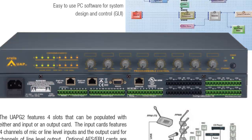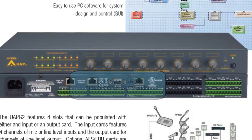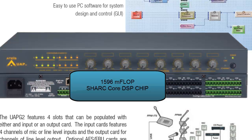There are also nice hardware features inside the box. The audio input and output cards are 100% field-configurable. If you order an 8x8 box and arrive on the job site needing a 12x4 configuration, simply order the necessary cards, pop the top, plug in the boards, power up, and reconfigure — no need to send the unit back. The UAP also features a 1596 MegaFLOPS Shark Core DSP engine, making it a very powerful processor.